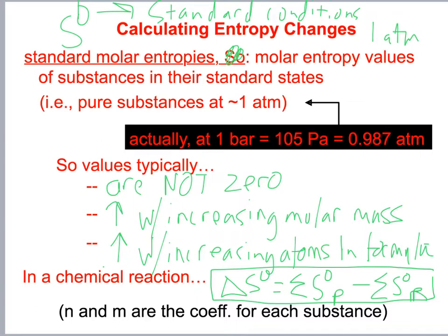M and N are the stoichiometric coefficients for each species. Products minus reactants — you've got to add them up using those coefficients.